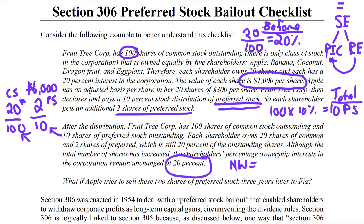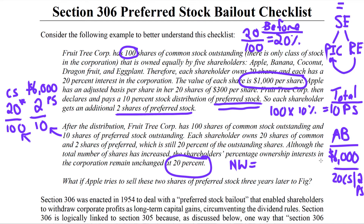That $6,000 adjusted basis — $300 per share times 20 shares — will now be divided over the 20 common shares and the 2 preferred shares. To figure out how to calculate that, refer back to the corporate stock distribution video. What we're focused on here is what happens if Apple tries to sell the two shares of preferred stock received, three years later, to FIG or any owner — or possibly in a redemption. That's what this checklist focuses on.